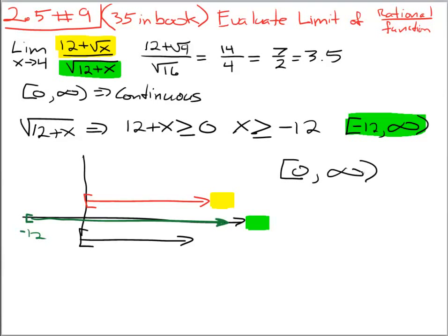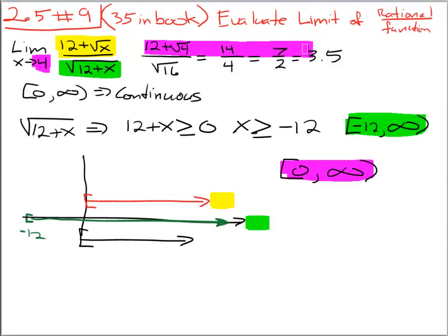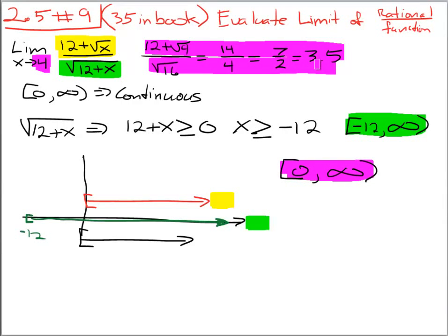Now the next thing it asks for or it points out is the fact that 4, right, is in this interval. And since 4 is in that interval we know that the function is continuous at 4, and because the function is continuous at 4 we are allowed to do this simple math here and state that the limit does in fact equal 7.5 or 3.5 whichever way you want to write it.